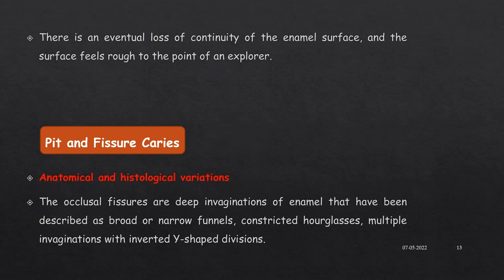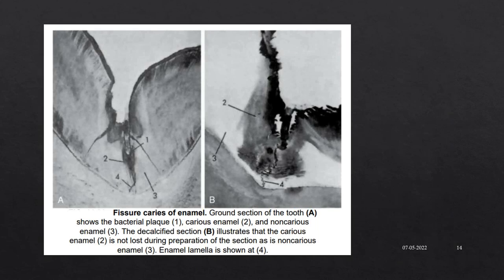Pit and fissure caries differs from smooth surface caries anatomically and histologically. The occlusal surface features deep invaginations of enamel described as broad or narrow funnels, constricted hourglasses, or multiple invaginations with inverted Y-shaped divisions. A ground section of a tooth shows caries enamel and non-caries enamel. In the decalcification section, enamel lamellae may be present. Few authors have suggested that enamel lamellae, as an area of weakness, acts as a pathway for bacterial invasion into the enamel, which leads to accumulation of plaque and later progress into caries.